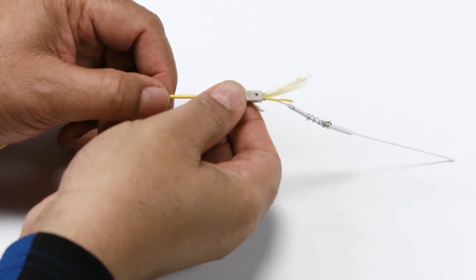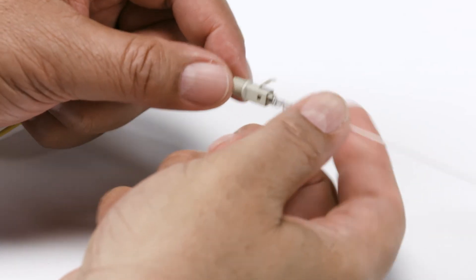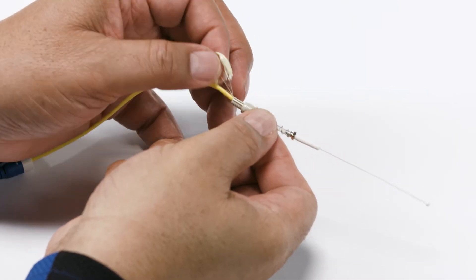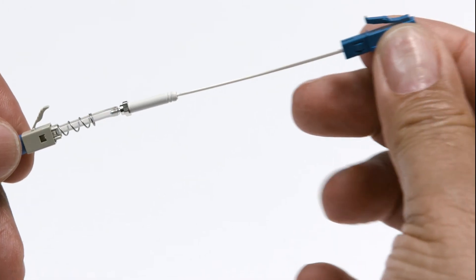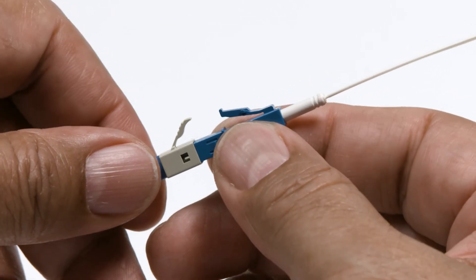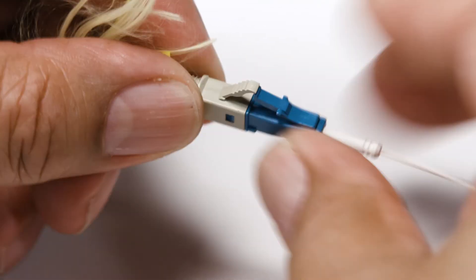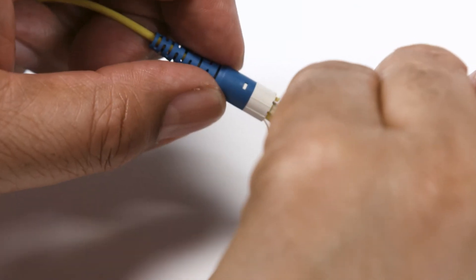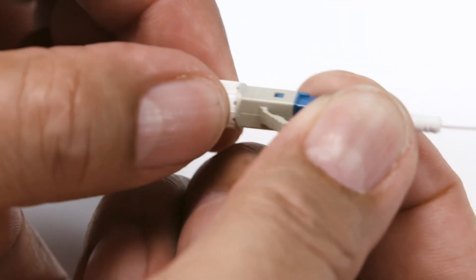Now you're ready to assemble the connector. Bring rear connector components to the sleeve and lightly seat sleeve. Mate front connector components to rear components. Remove the tether.